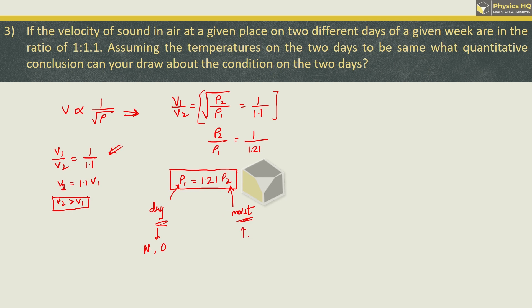Now first day pe density was higher means it is probably a day where air was dry. On second day density was lower means that day the air was moist. This is the conclusion we draw that on the first day the air was dry and on the second day the air was moist. Hope you all understood this.